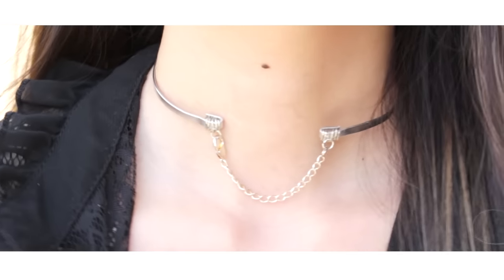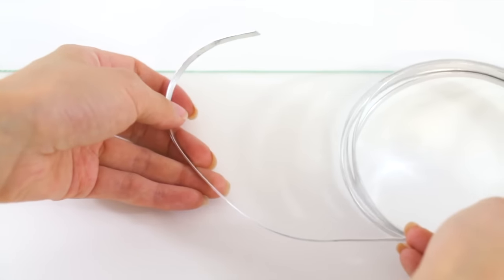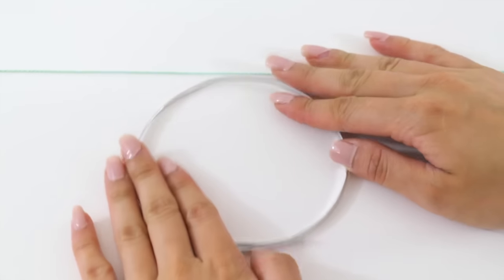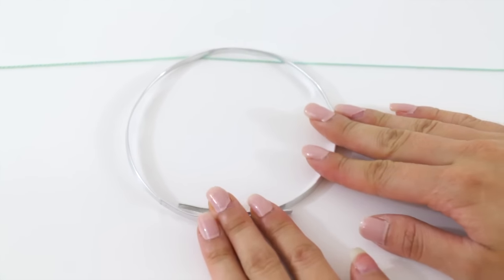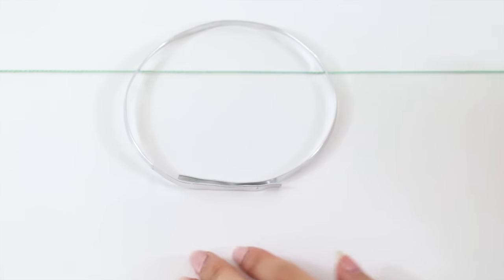I really like this next choker because I feel like it's relatively unique looking, and it's pretty easy to make. You're going to need some flat wiring that's relatively malleable. I just picked mine up from Michaels. Bend the wire to about the circumference of your neck, and then just trim it off. Feel free to trim more or less of the wires depending on how big you want the gap to be.